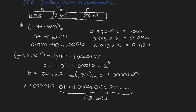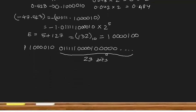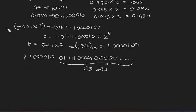If the question asks you to also express the result in hexadecimal, you can do so easily. Divide all 32 bits into groups of four and convert each group to hexadecimal. For example, the first four bits 1000 equal 8, and 1100 equals C in hexadecimal. Just keep converting each four-bit group.